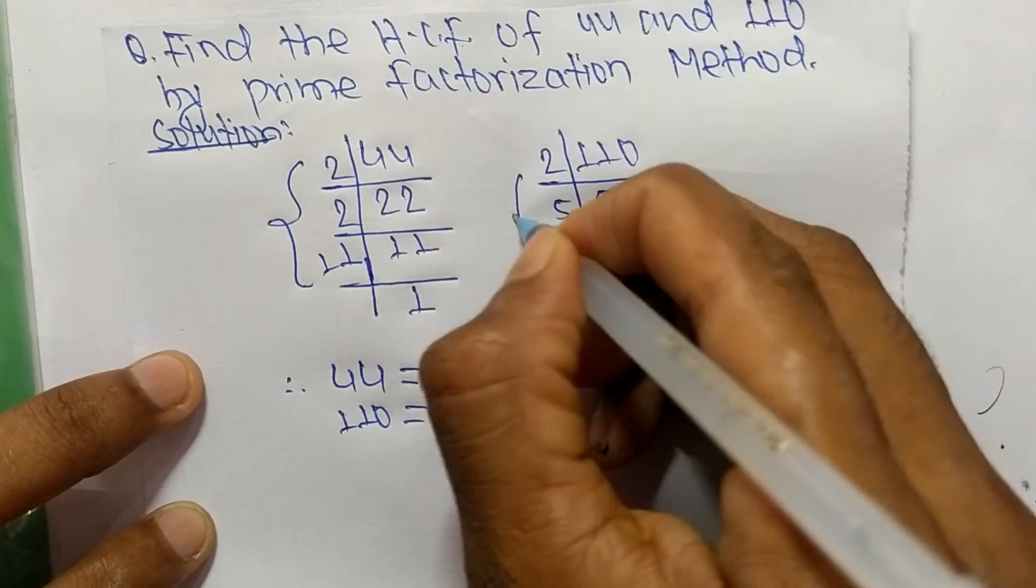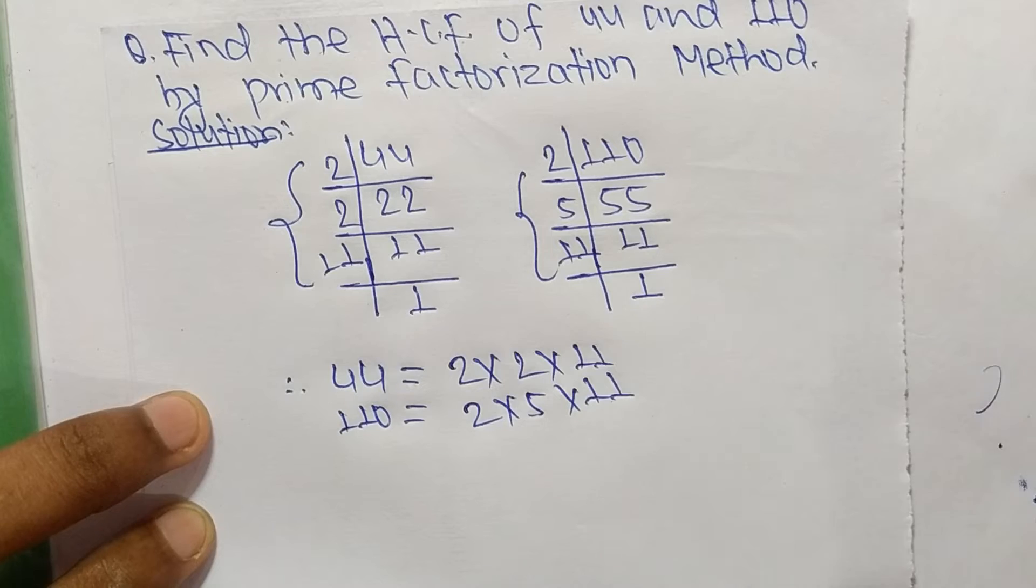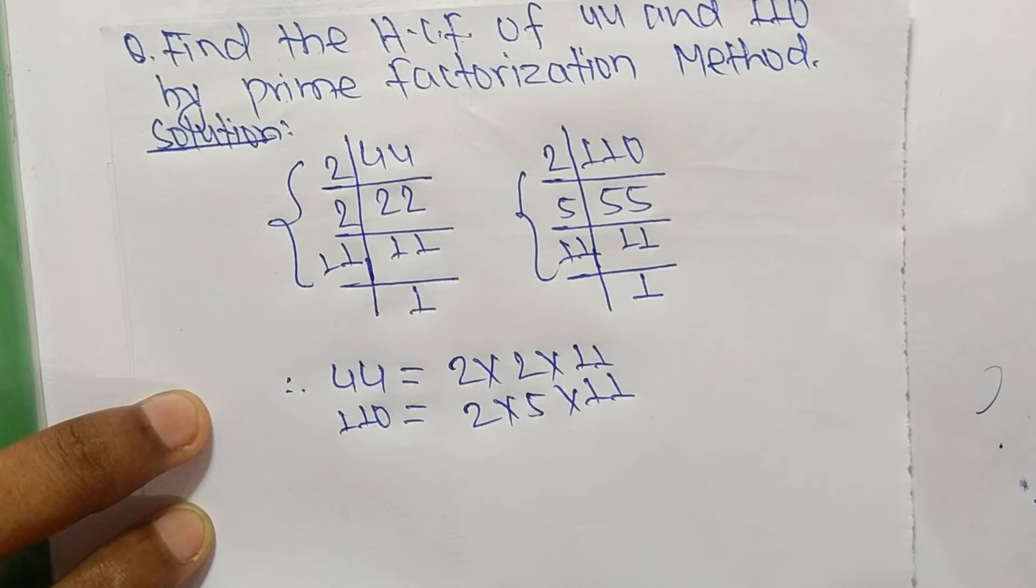is equal to, from this part, 2 times 5 times 11. Now we select the common factors